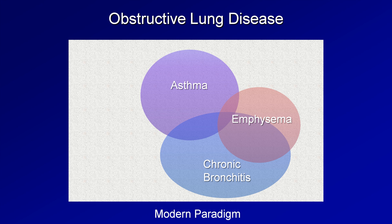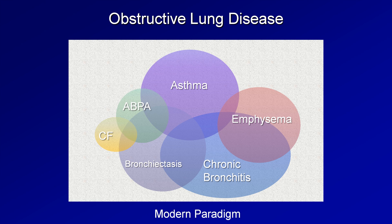In addition, there are a few other members of the obstructive lung disease group. There is bronchiectasis, which is permanent enlargement of the airways leading to chronic bacterial colonization, frequent infections, excessive mucus production, and a chronic productive cough. There is cystic fibrosis, an autosomal recessive genetic disorder involving a membrane protein that acts as a chloride ion channel. Finally, there is allergic bronchopulmonary aspergillosis, which is a chronic allergic response to aspergillus colonization, most frequently seen in asthmatics.